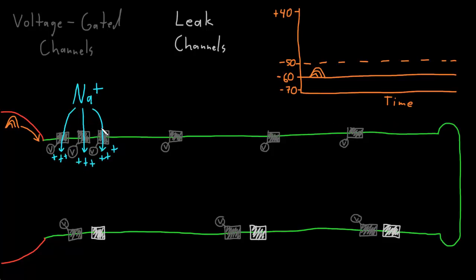The trigger zone has the greatest density of voltage-gated sodium channels, which is why action potentials usually start there. So many of these channels open that the membrane permeability to sodium is dramatically increased. The membrane potential, which already moved from the resting potential to the threshold from graded potentials, now dramatically rises as sodium flows in, heading toward the equilibrium potential of sodium at around positive 50 millivolts. This rapid increase is called the rising phase of the action potential. It becomes more positive inside the neuron — a reversal of the resting potential.